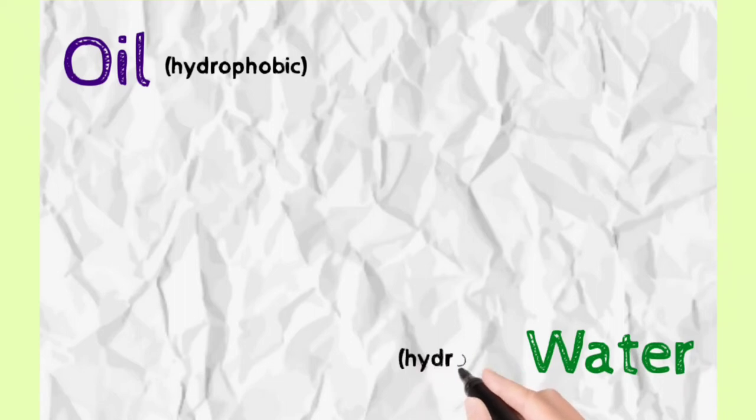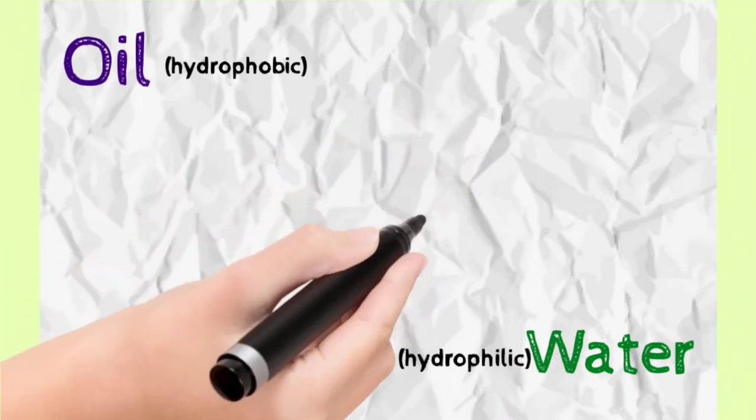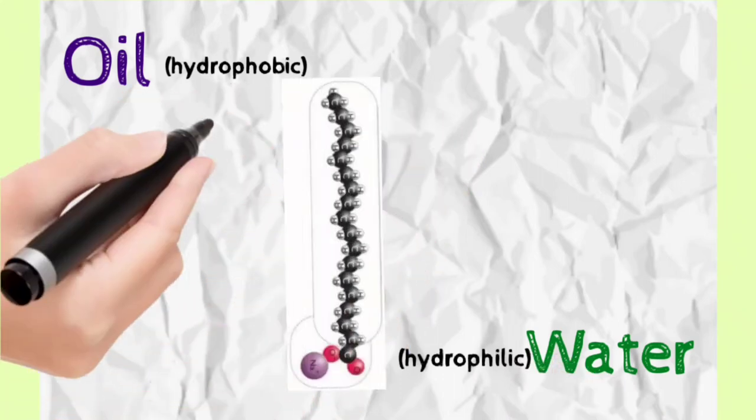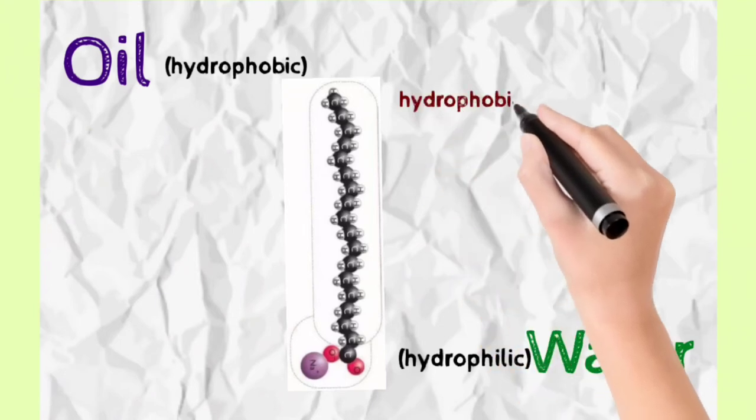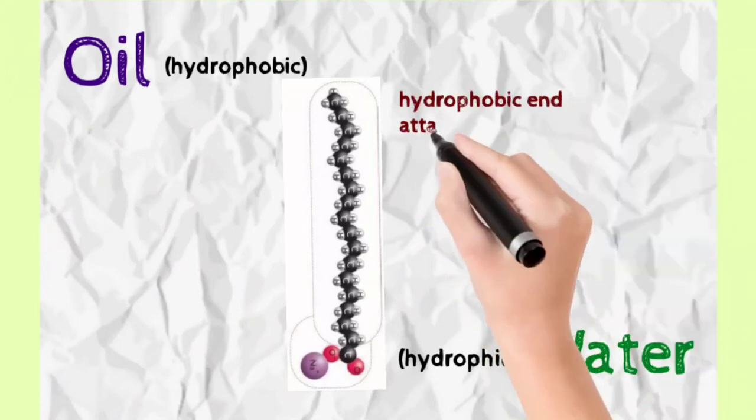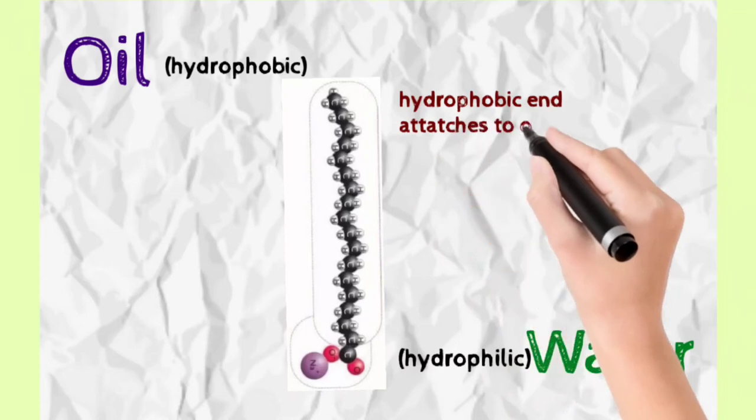clean. The hydrophilic end, so the two major components which we keep in mind are soap, oil, and water. Now soap's end is hydrophobic—the carbon's end. When we clean the surface, this